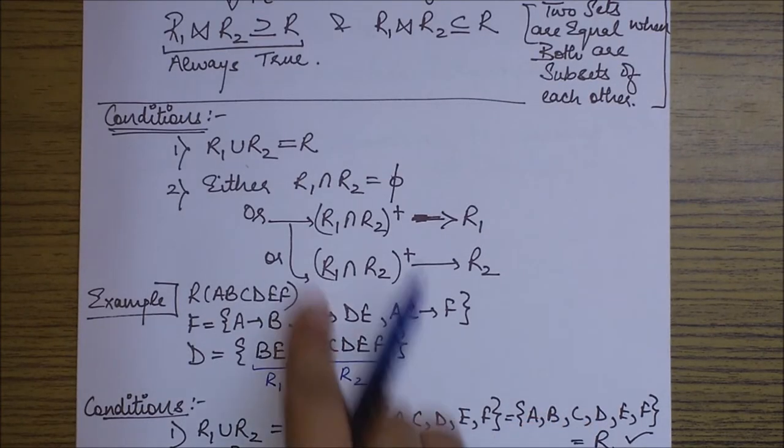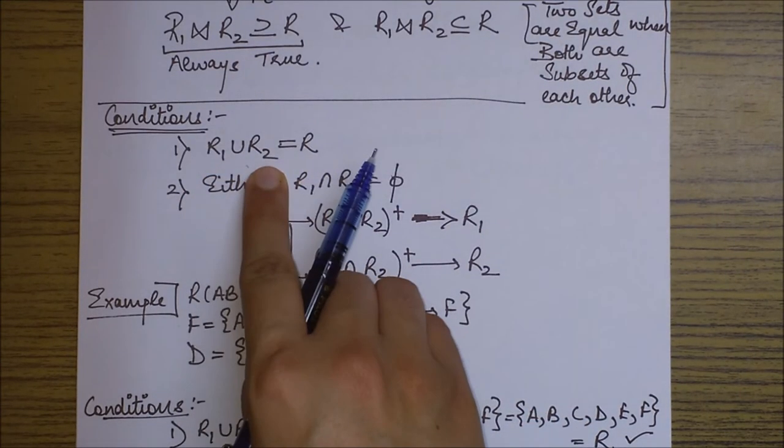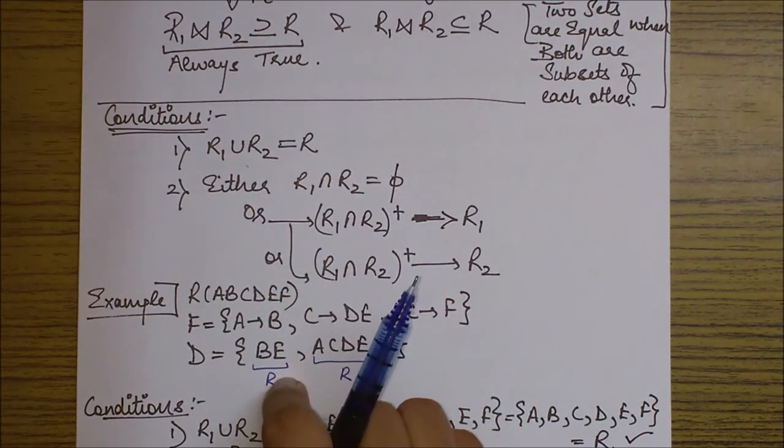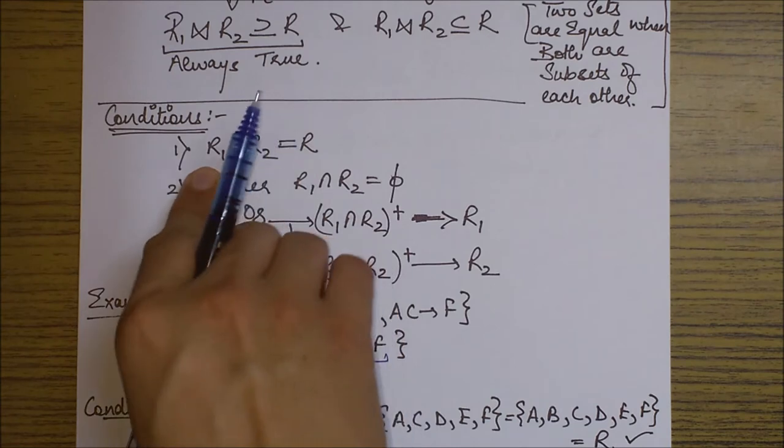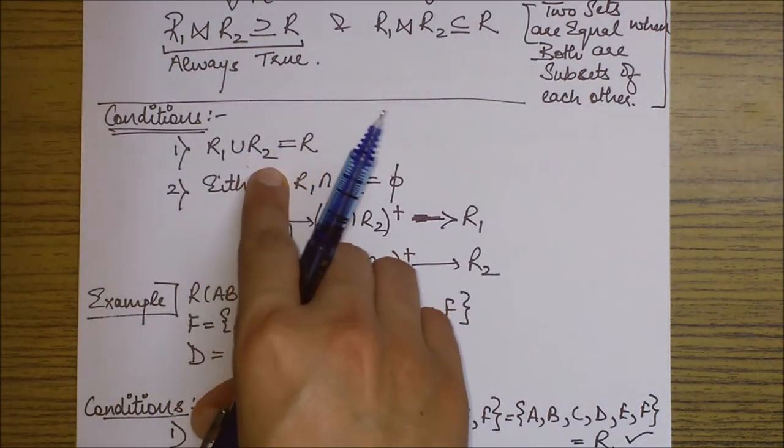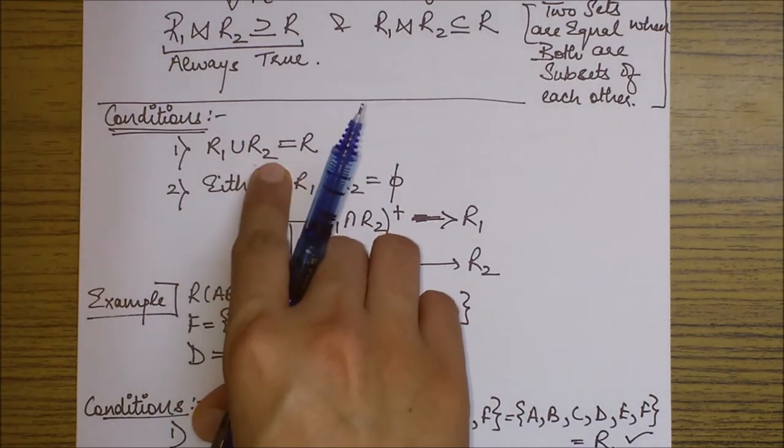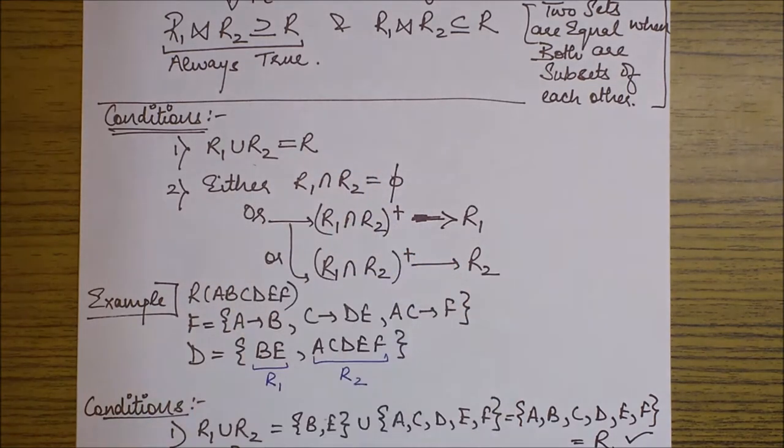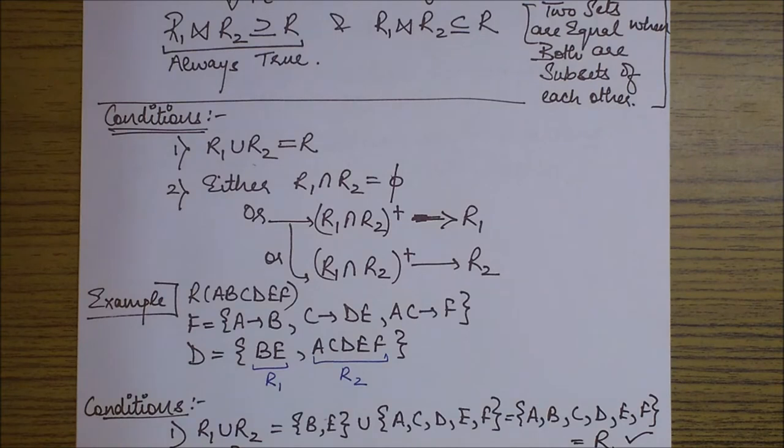So first of all, the first condition is R1 union R2 should be equal to R. What do I mean from this? I mean that whatever are the attributes in R1 and whatever are the attributes in R2, when I combine both of them, then it should result in the complete set of attributes present in R. So this is a very simple property to check. We will see to it when we discuss an example.